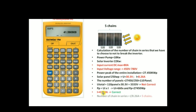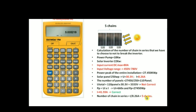To find the number of chains in series we need, we divide this current value by 8.26 amps, which is the current delivered by each individual panel. So we divide 41.59 amps by 8.26 amps, and as you can see, the result is 5. We're going to need five chains in series to respect the ranges of the solar inverter.